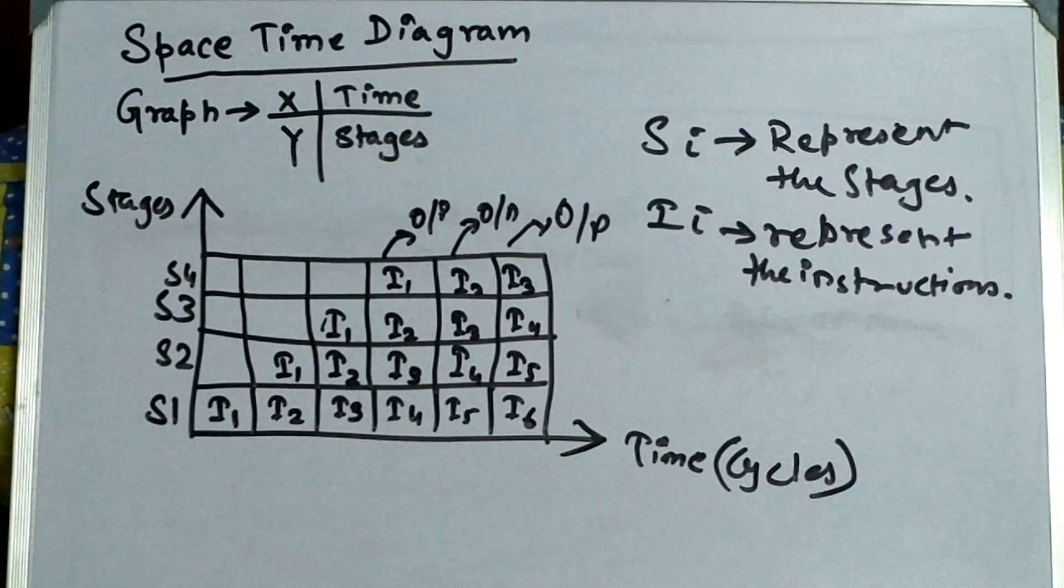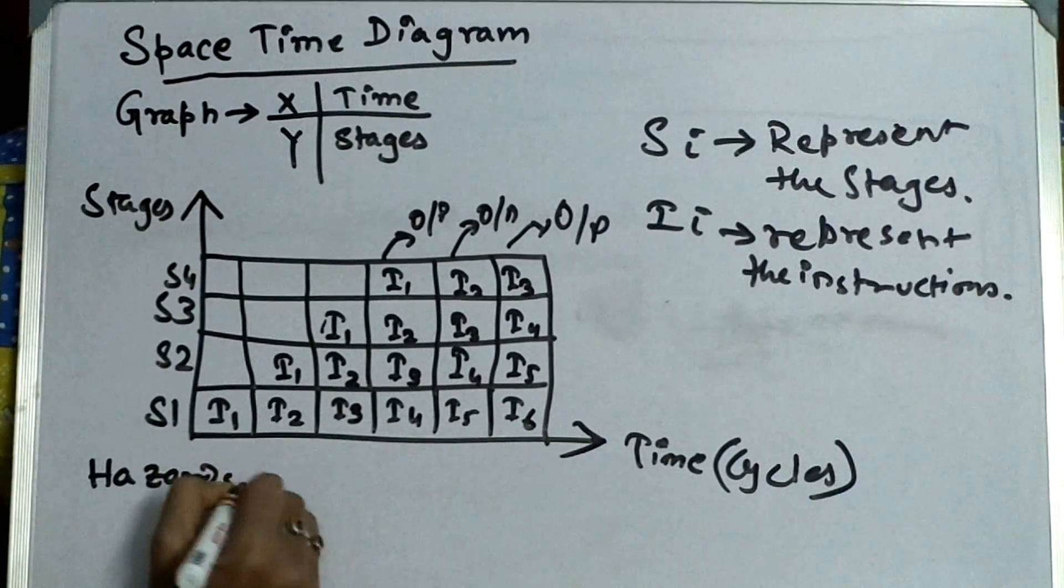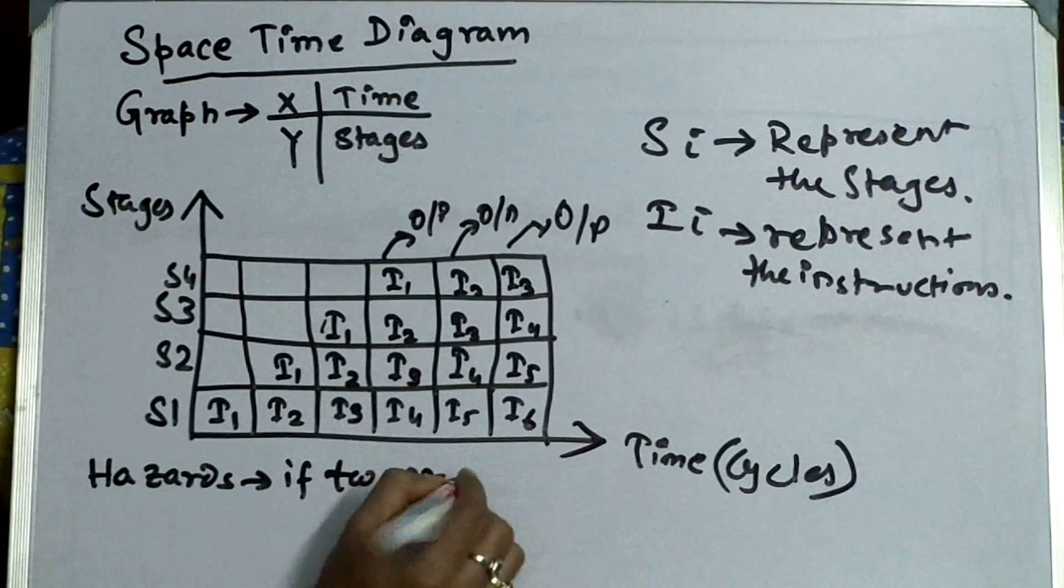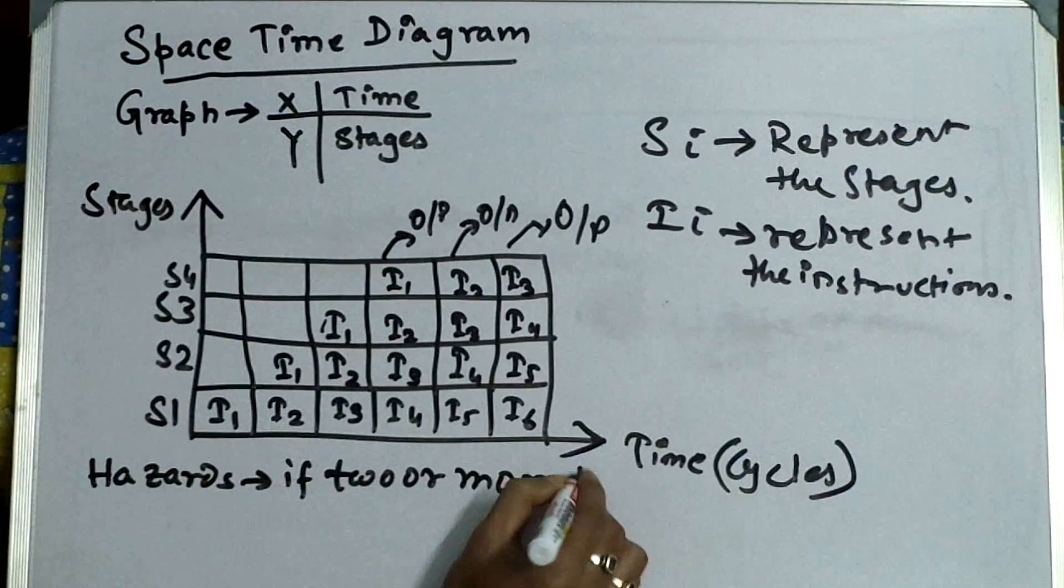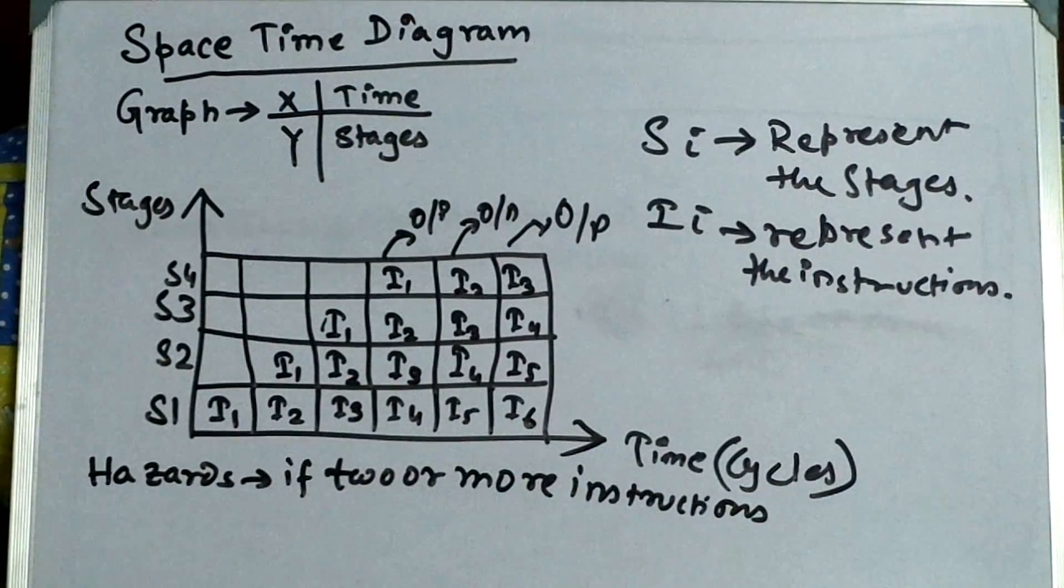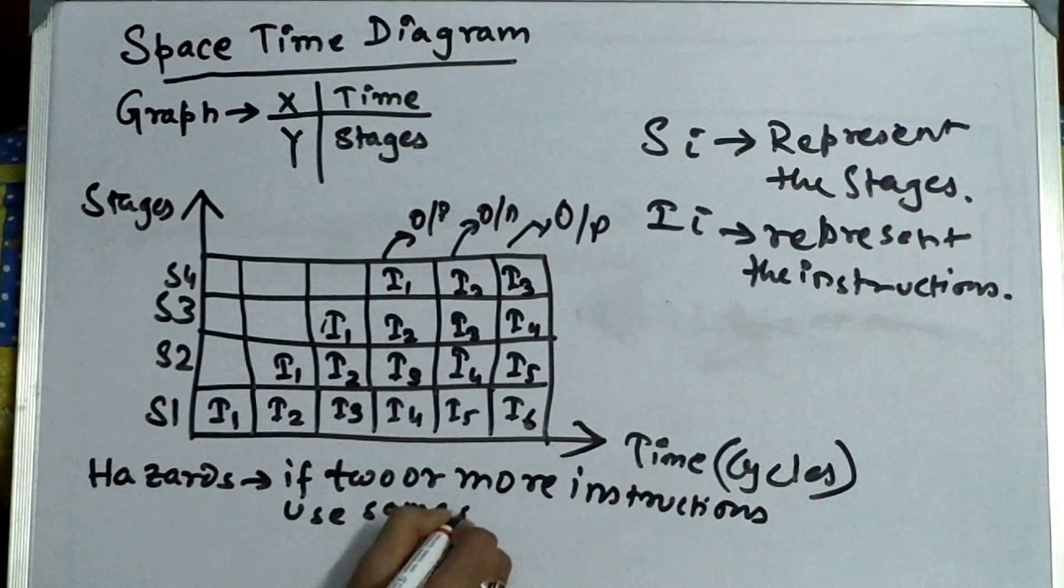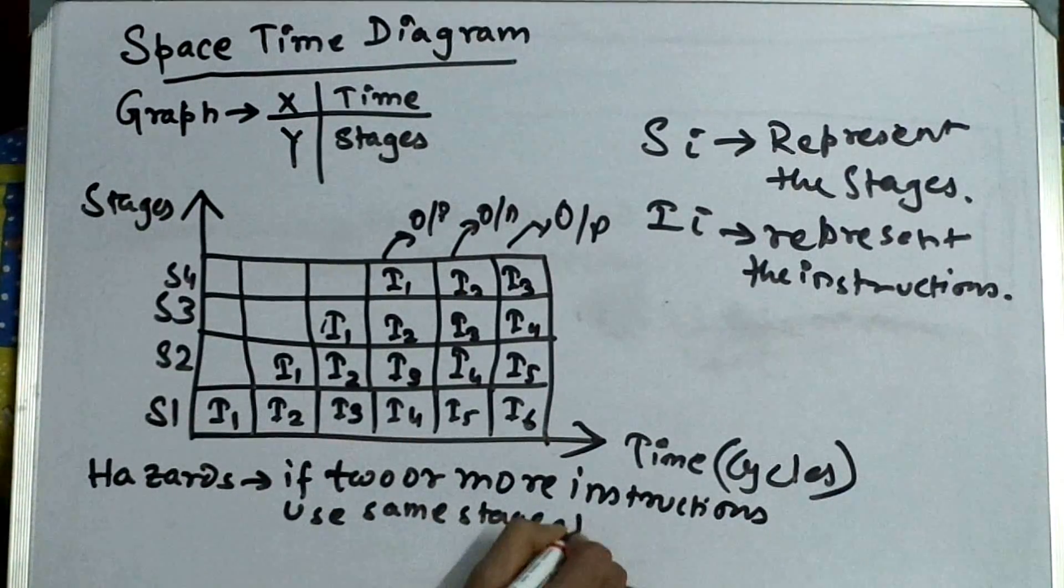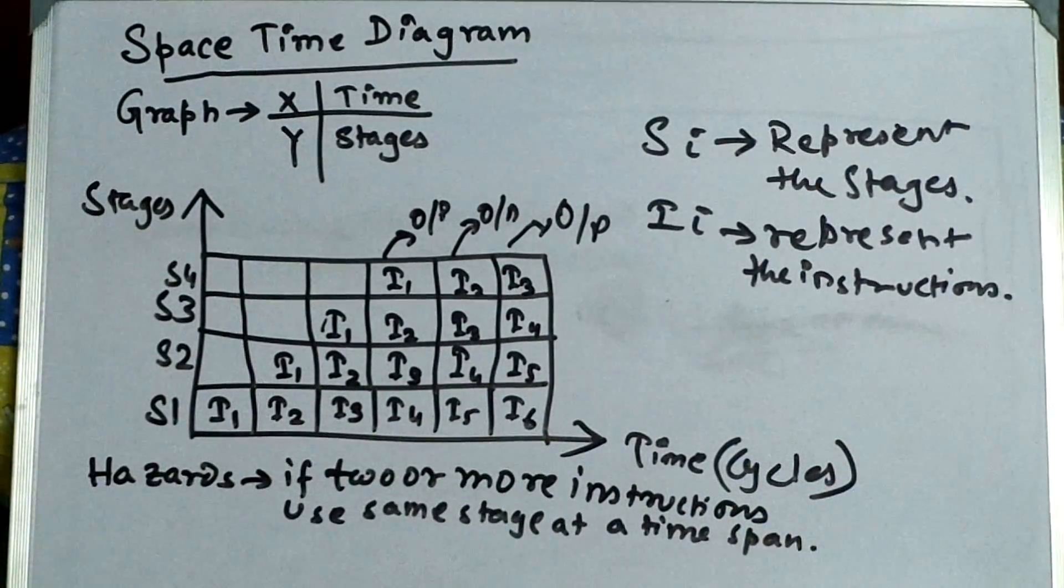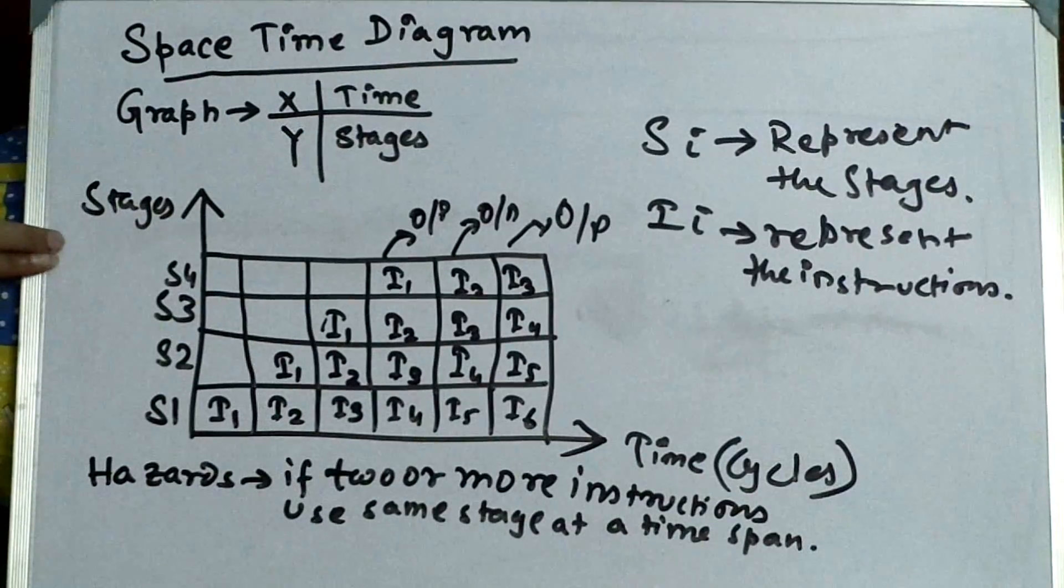So firstly, what is hazard? Hazard is nothing but if two or more instructions use same stage at a single time span. So that is the hazard we can tell through the space-time diagram.